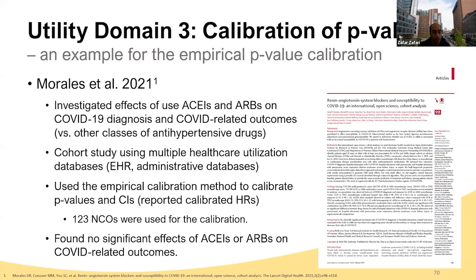A good example is the study by Morales et al., looking at the effect of ACEIs and ARBs on COVID-19 diagnosis and outcomes. They used 123 NCOs or negative control outcomes to calibrate p-value, and they found no statistical significance for the effect of ACEIs or ARBs on COVID-19-related outcomes.